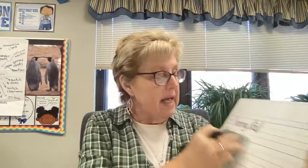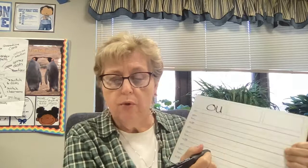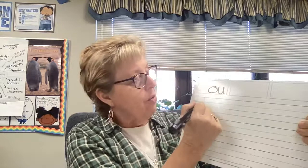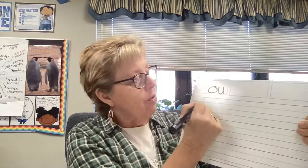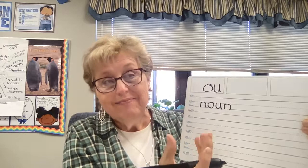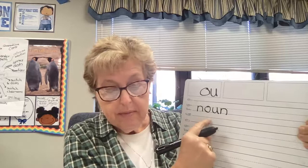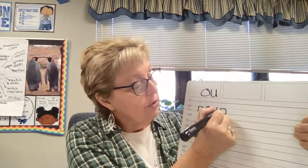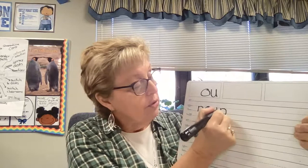Our first word has O-U in it — the sound of 'ow.' Echo me: noun. Elbows up — noun. The word 'noun' means a person, place, or thing. For example, 'boy' is a person, 'school' is a place, and 'bat' or 'ball' is a thing. We circle the O-U because it is a double vowel syllable.